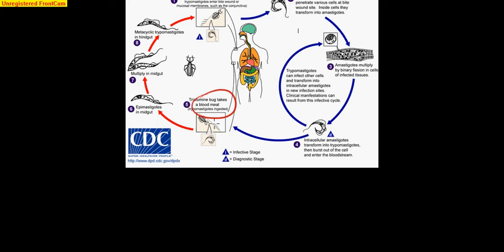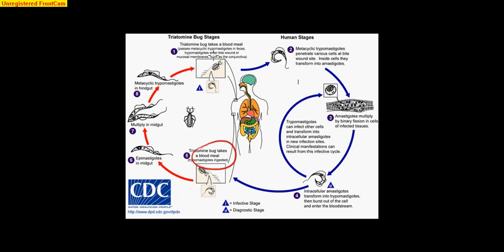So it's going to go into the amastigote's mid-gut. It's going to multiply, and then it's going to go basically to its anus, and that's pretty much the whole cycle. Then it's going to infect you. That's the first stage. Then it's going to come over here, and it's going to penetrate various cells. So it's going to infect the cells, and it's going to transform into these amastigotes.